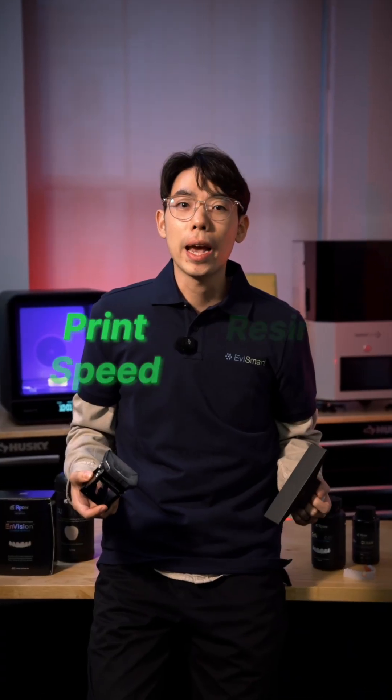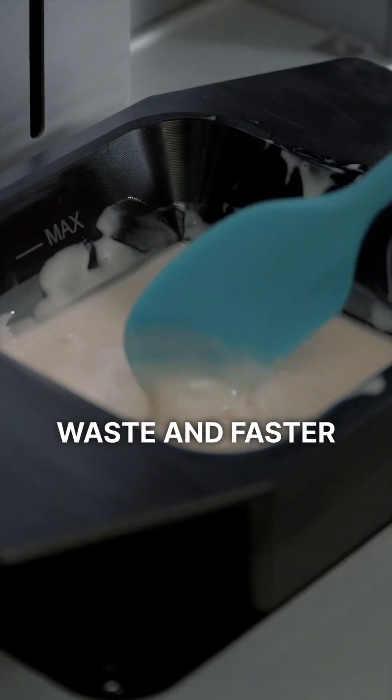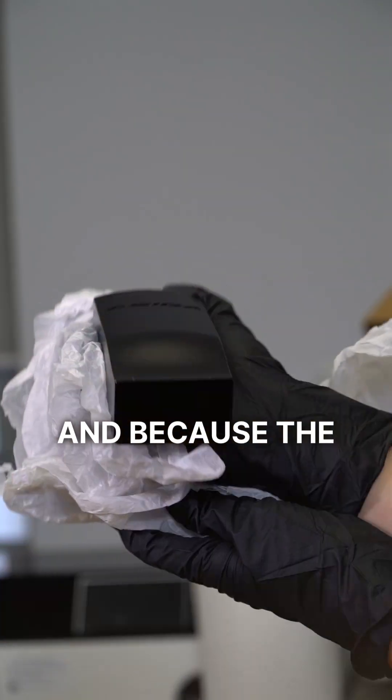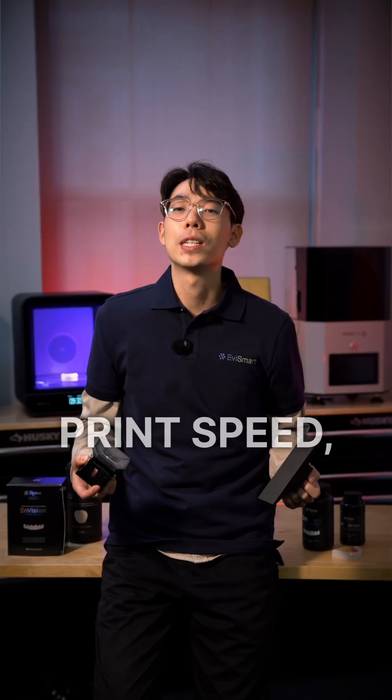The biggest upside? Print speed and resin efficiency. Use less material per print, which means less waste and faster turnaround times. And because the surface area is smaller, there's less peeling force. That's what gives you those quicker print speeds.